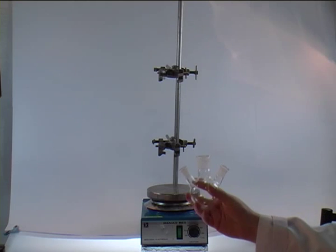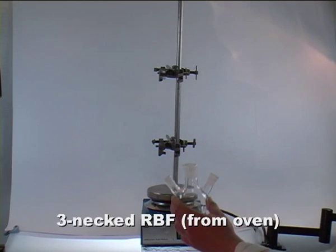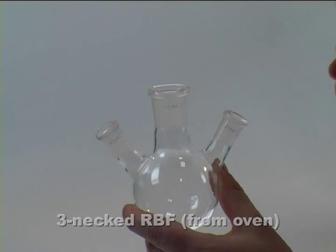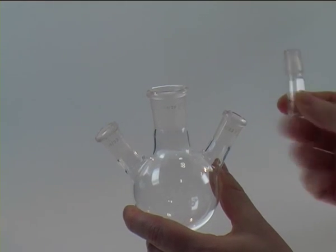Next we are going to take the three necked round bottom flask out of the oven so that it is dry. Before it is cooling down, we are going to stopper one of the three necks.